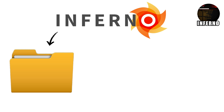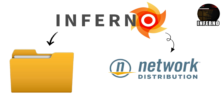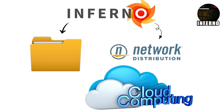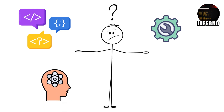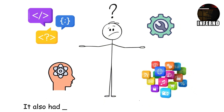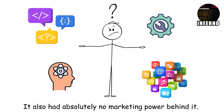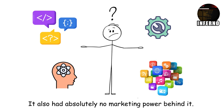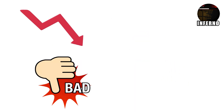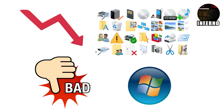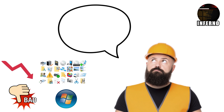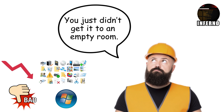Inferno treated everything like a file and focused on network distribution way before cloud computing was mainstream. In theory, it was genius. In practice, nobody wanted to learn a new language, new tools, and a new philosophy just to run basic applications. It also had absolutely no marketing power behind it, so Inferno became one of the most advanced operating systems nobody ever used. It failed because it demanded too much from a world that just wanted Windows icons and a start menu. Somewhere, there's probably still an engineer whispering, 'you just didn't get it' to an empty room.